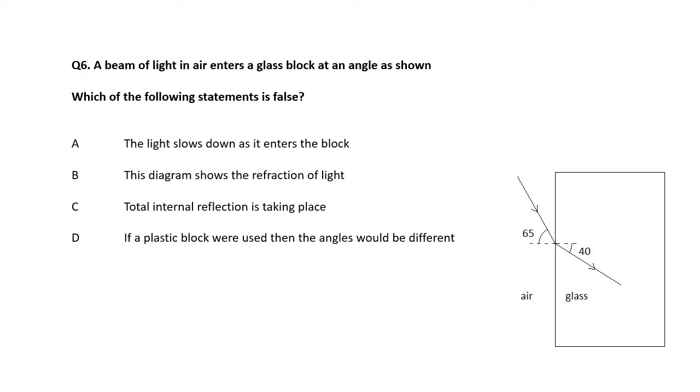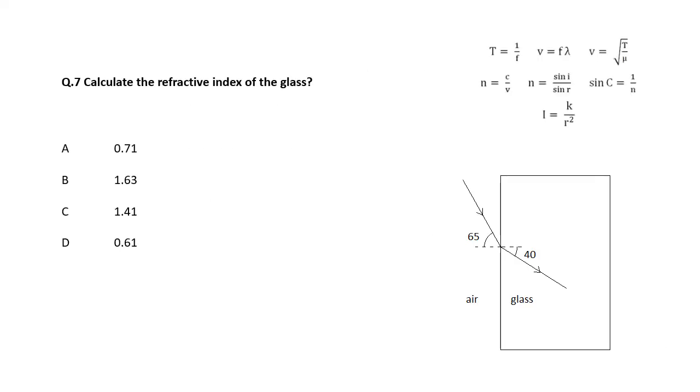Next, beam applied, which is false. It's nothing to do with total internal reflection. Calculate the refractive index of the glass. We are going to use this equation here. N equals sine I over sine R. I is the big angle, that's the angle of incidence. R is the smaller angle, the angle of refraction. So you've got N, which is the refractive index, is sine 65 divided by sine 40. And if you work that out on your calculator, you should get 1.41.